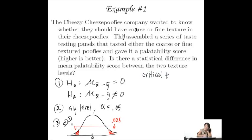And in order to find the critical t, we're going to have to find the degrees of freedom. So what's the degrees of freedom? Well, n sub x, we'll call x coarseness. So x will be coarse cheesy poofies.